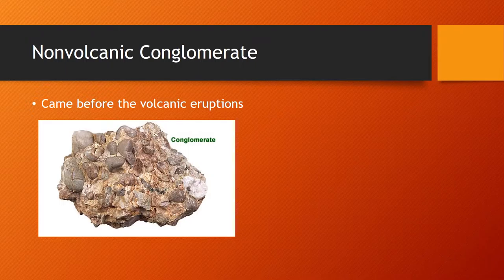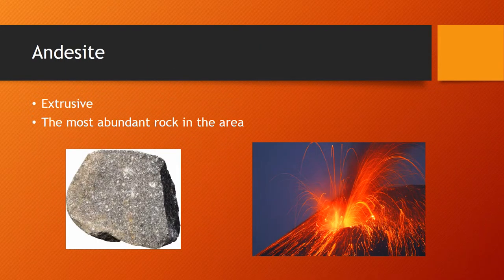Before the volcanic activity in our area, a layer of non-volcanic conglomerate rock was deposited from when the area was a seabed. The next part of our geologic timescale includes the formation of volcanoes, which erupted effusively to form andesite, which is an extrusive igneous rock of an intermediate composition. Also note that andesite is the most abundant rock in the area.